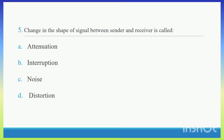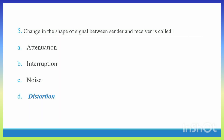Question 5. Change in the shape of signal between sender and receiver is called Distortion. Right Answer D.